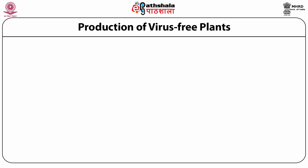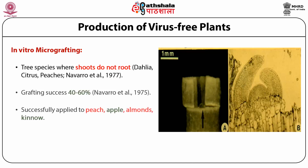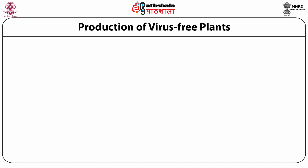The third technique is micro-grafting, used in trees such as Dahlia, citrus, and peaches where shoot tip culture is difficult to root. The shoots may develop but rooting is difficult. Therefore, the alternative is to take the shoot tip and graft it onto a root stock. Here you can see a tiny little bud grafted on a root stock; the shoot tip makes a union with the grafted stock and develops into a full plant. This has been applied to a number of fruit trees.